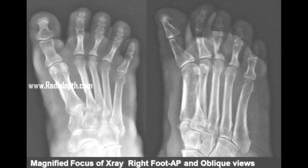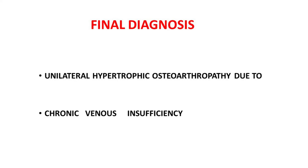A deep ulcer is also noticed in the plantar aspect of the big toe and in the medial forefoot. The final diagnosis is unilateral hypertrophic osteoarthropathy of the right leg secondary to venous stasis, due to poorly recanalized chronic deep vein thrombosis in the popliteal and infrapopliteal veins.